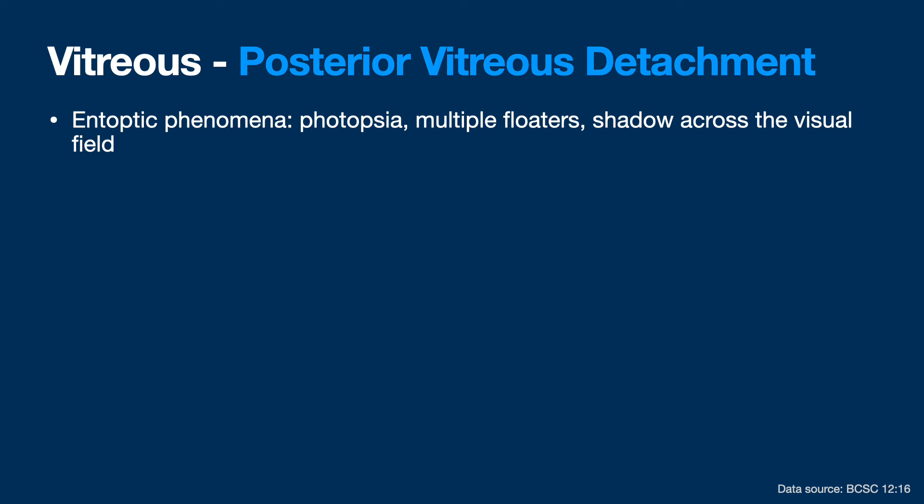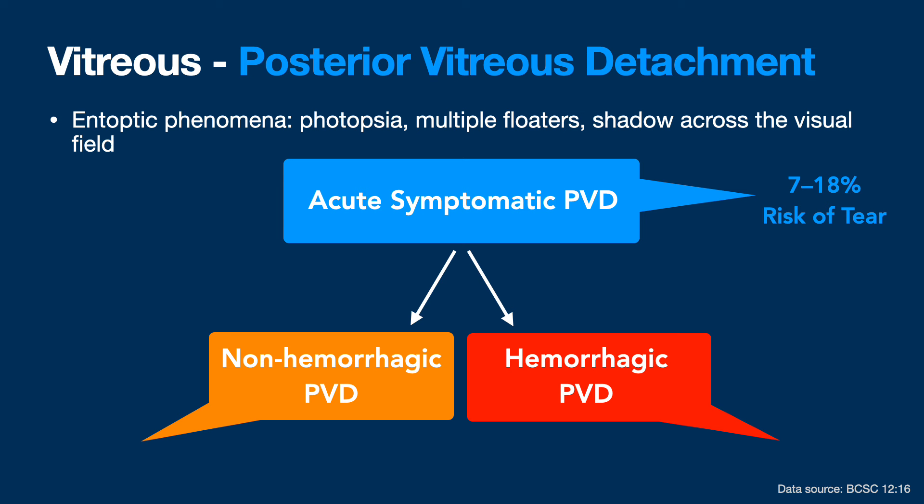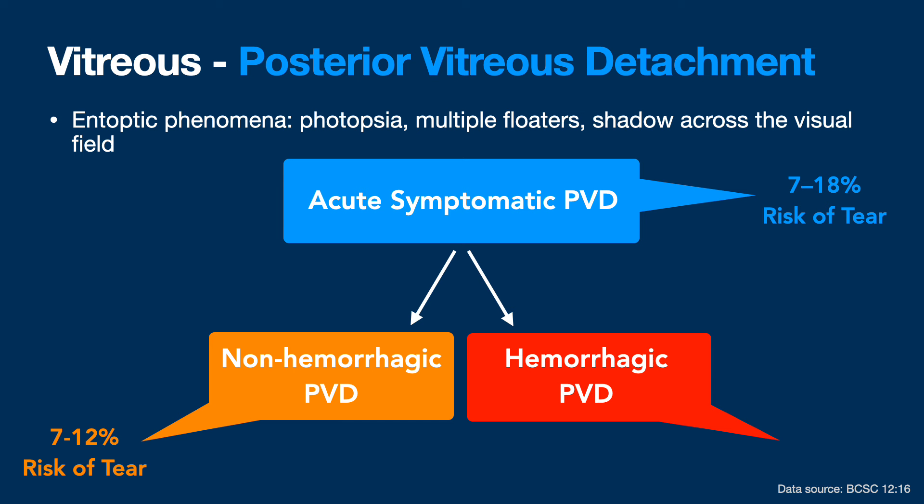PVD was not part of this chapter but I had to include it. Entoptic phenomena with PVD include photopsia and floaters. Risk of tear is 7% to 18%. You can break it down into hemorrhagic versus non-hemorrhagic: non-hemorrhagic is 7% to 12%, and if it's hemorrhagic, 50% to 70%. Not all hemorrhages after PVD point equally to a tear — some are just a few spots right around the disc where the gel pulls away, so I still follow closely but my threshold for worry is calibrated by experience.